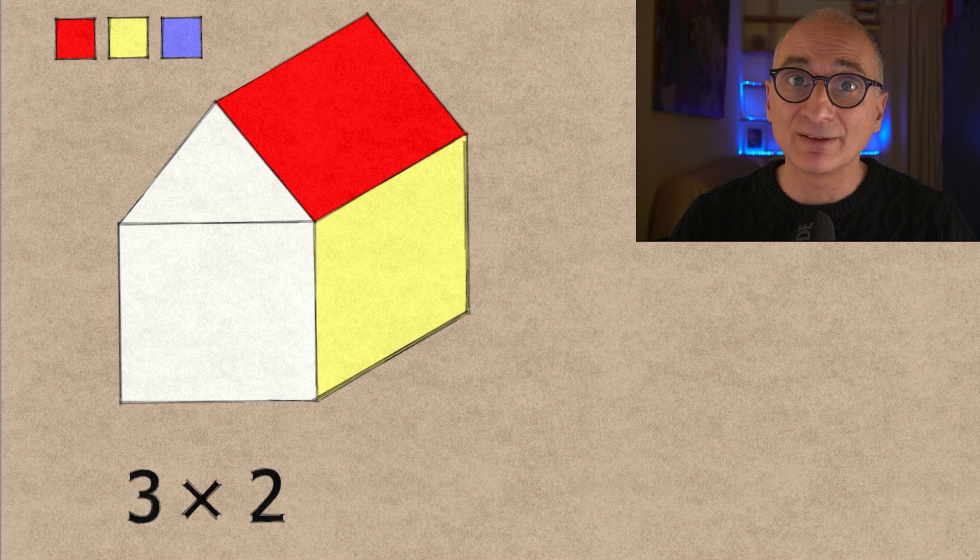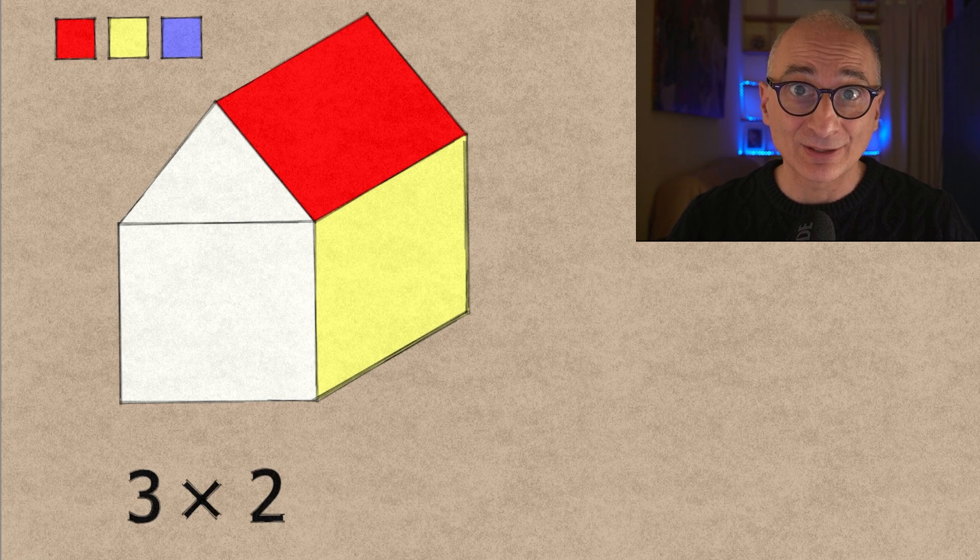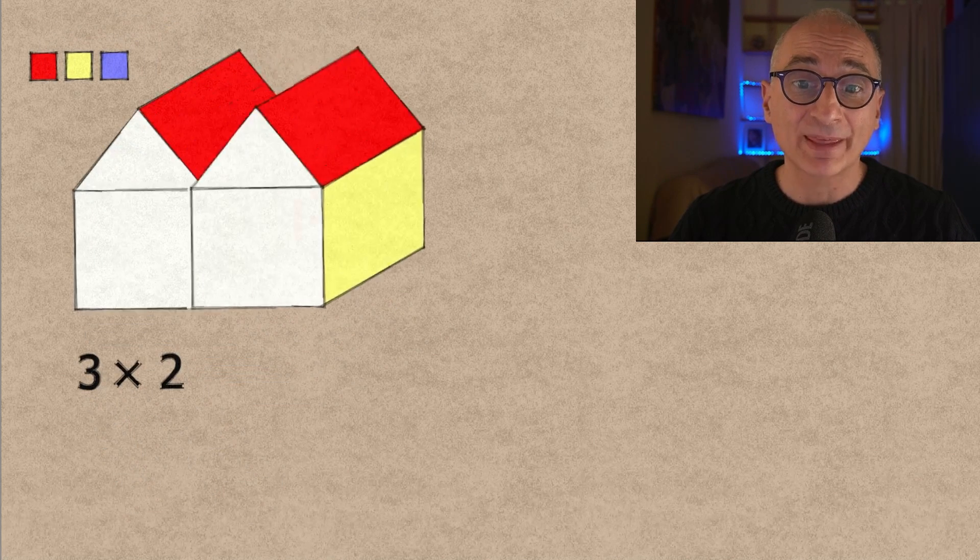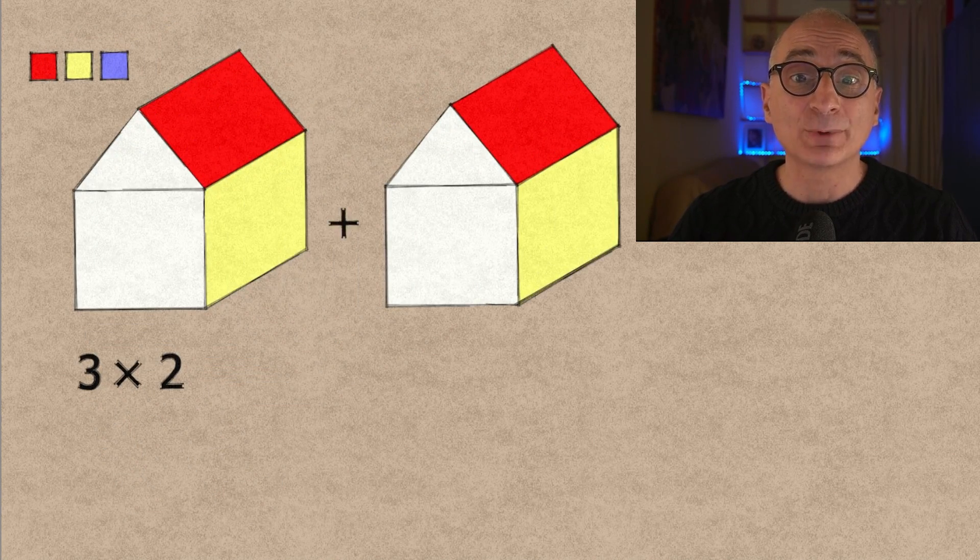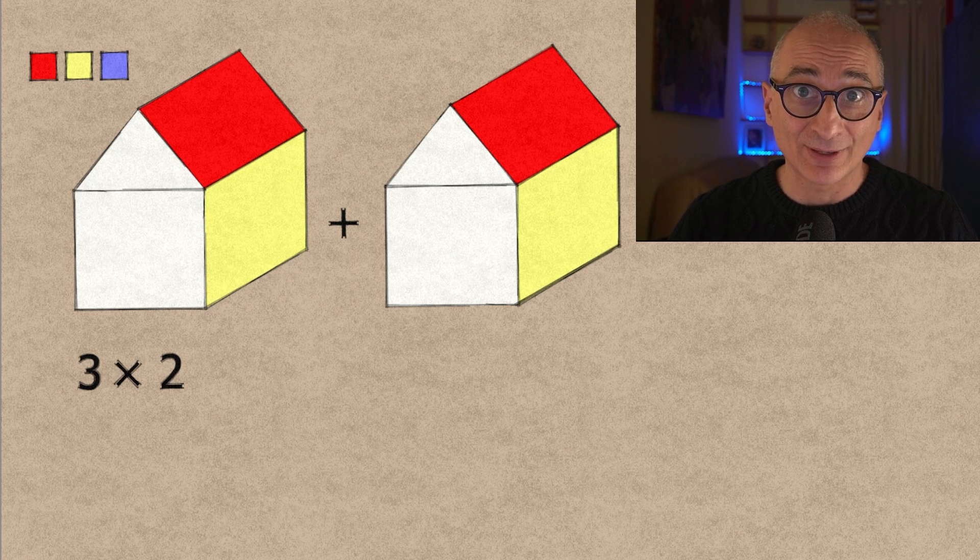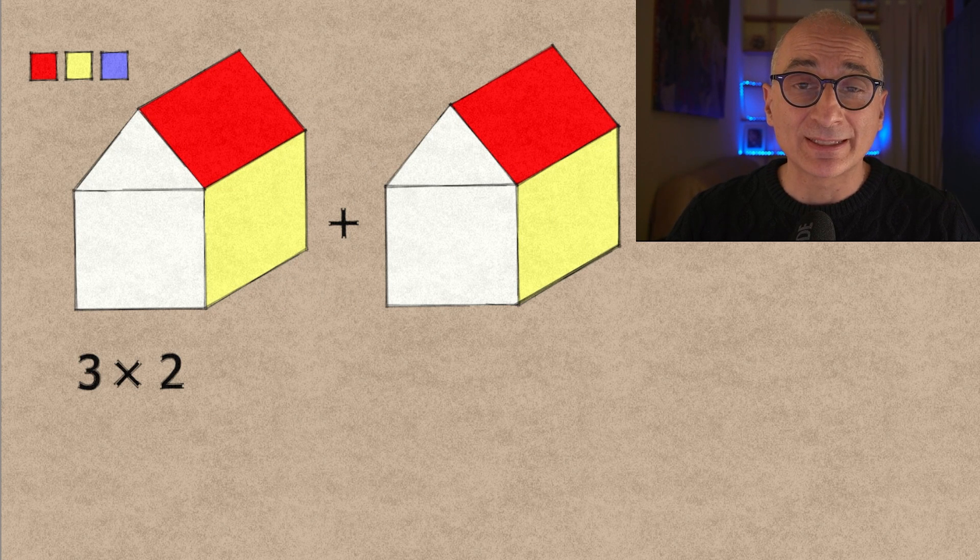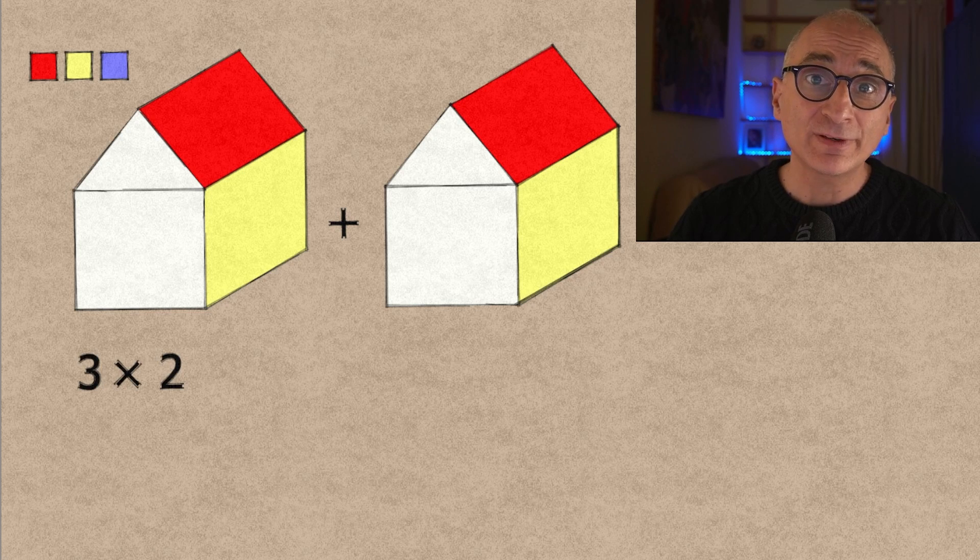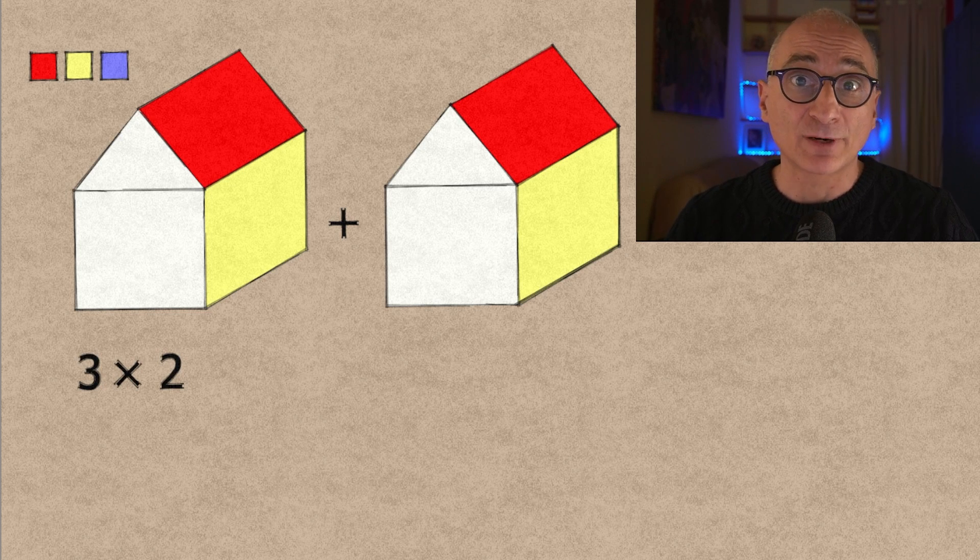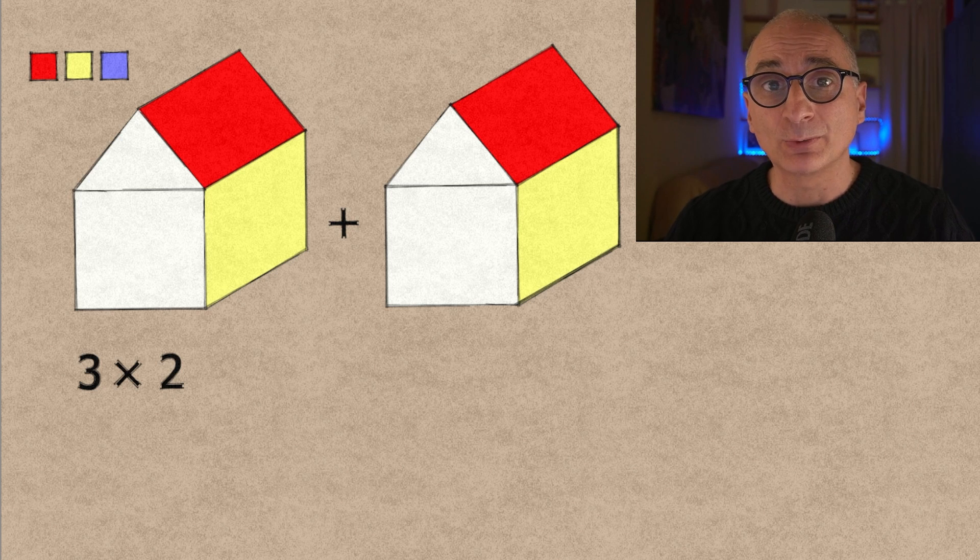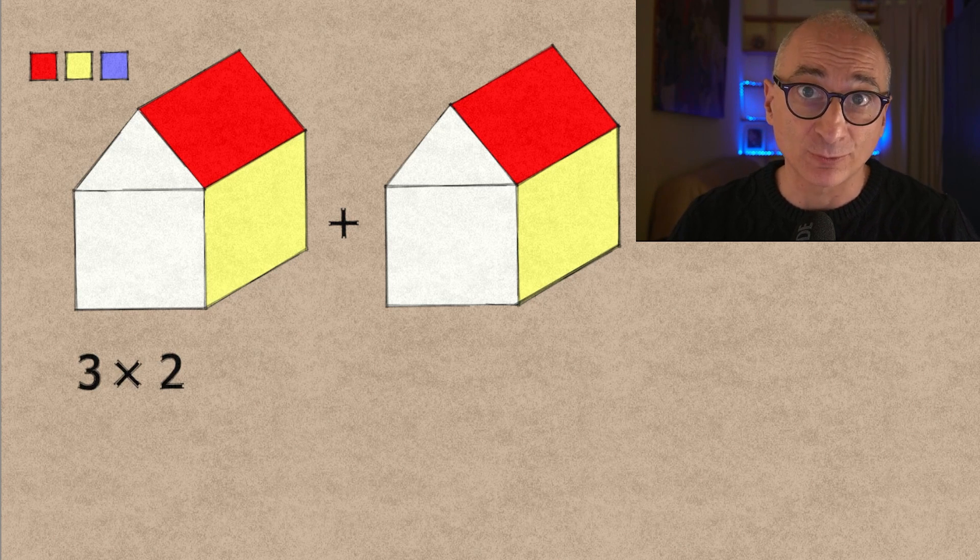And now let's be very very careful because there are two cases to consider here. So let's copy the house like that and at the end we will add all the possibilities together. In the first case we will consider the situation where the roof has the same color as the front wall. And in the second case we will consider the situation where the roof is different from the front wall.